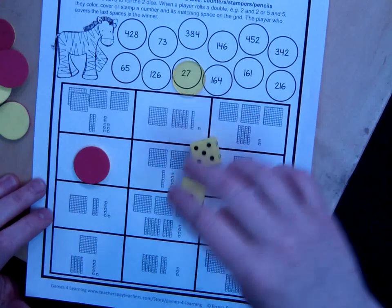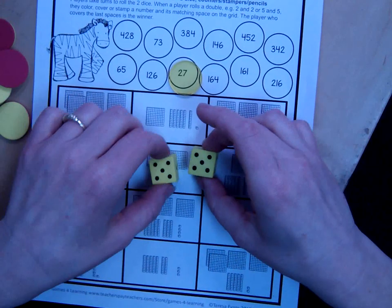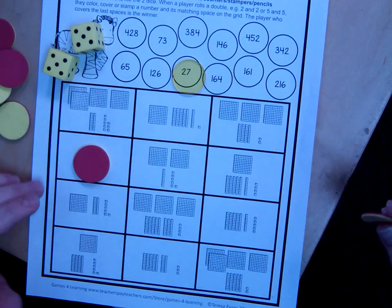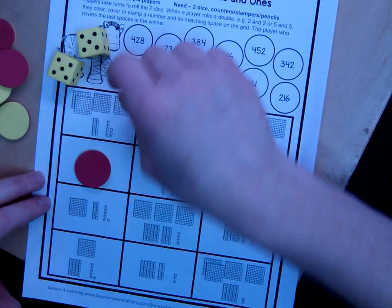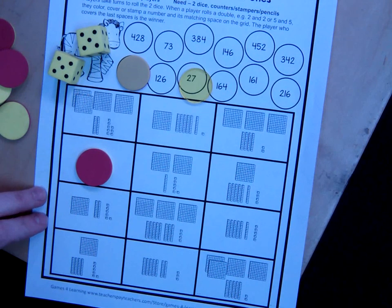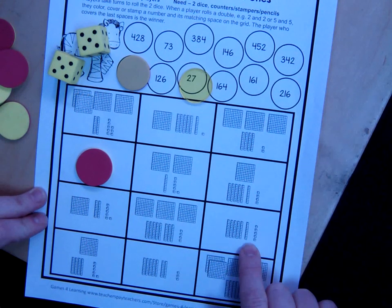Okay, now pretend like this player just rolled a double. Then, they can pick another number in standard form. I'm going to go with this number, 65. And I'm going to go find that in model form. So, I'm looking for 6 tens and 5 ones.